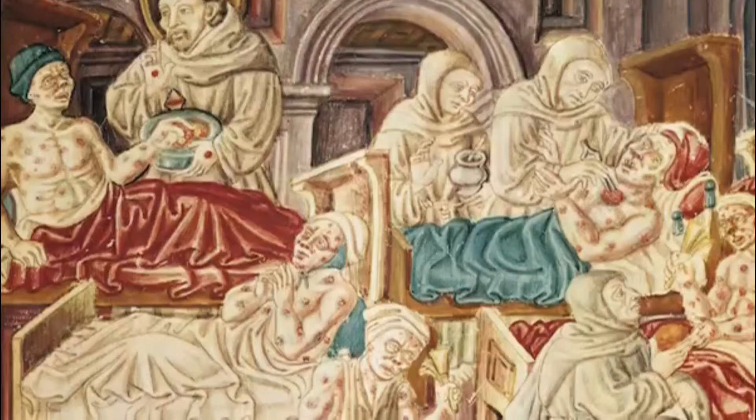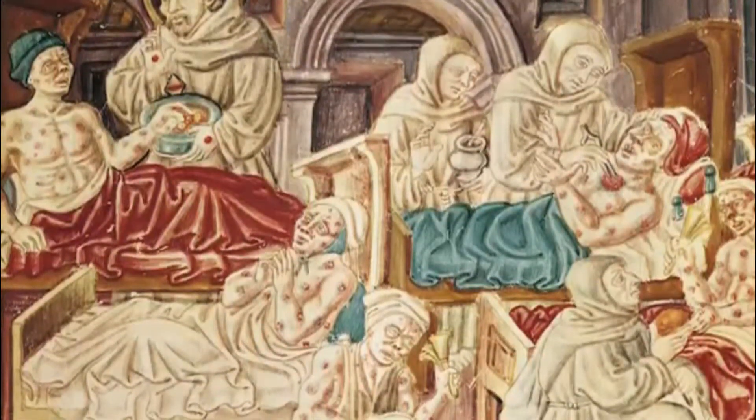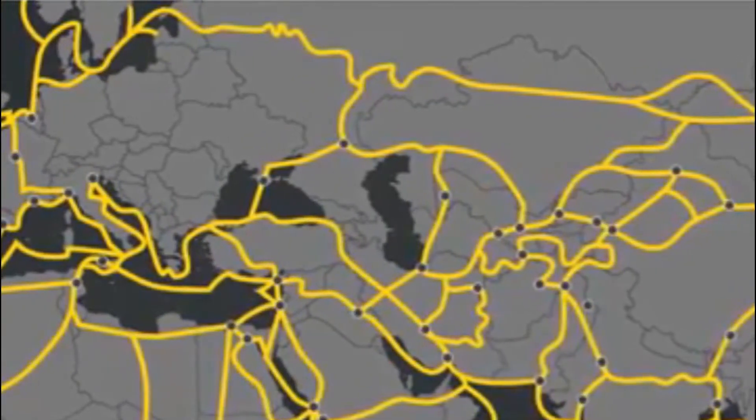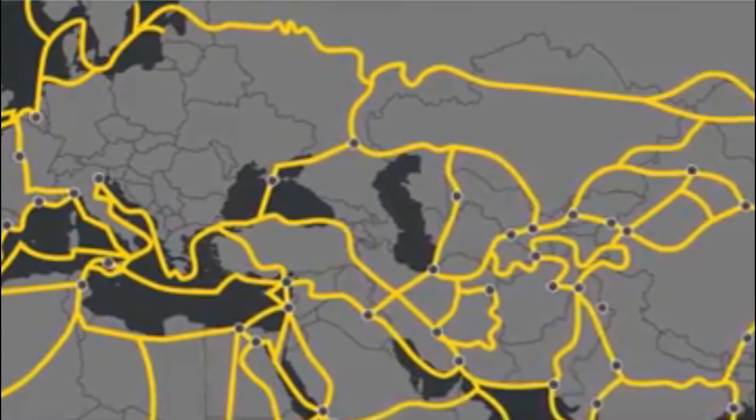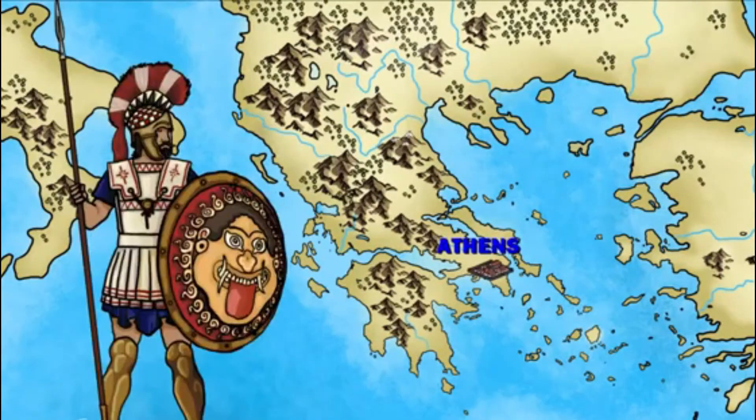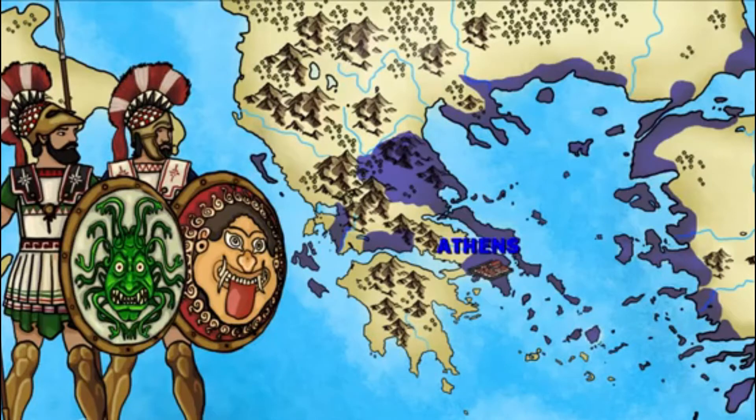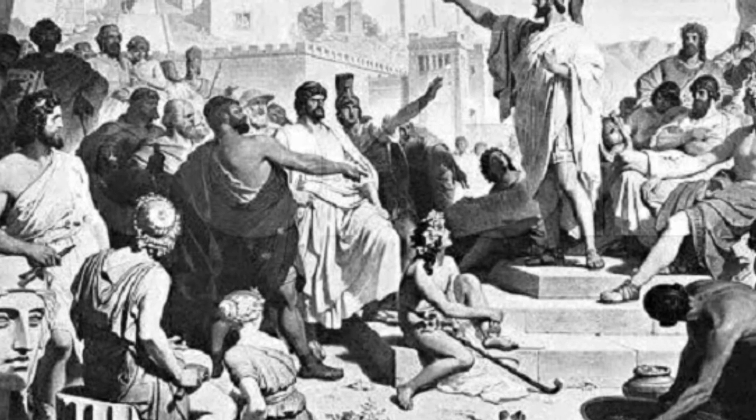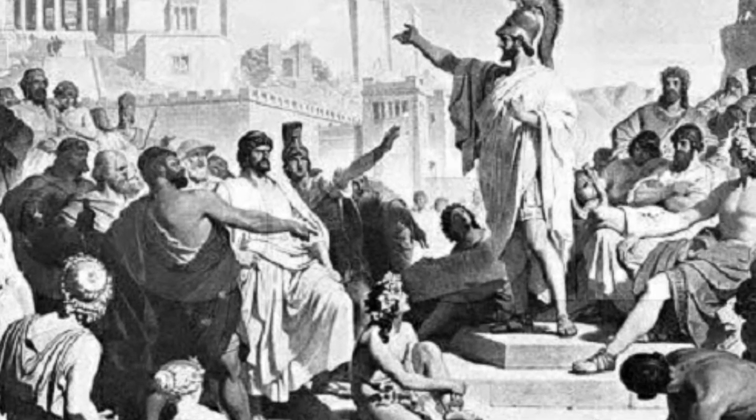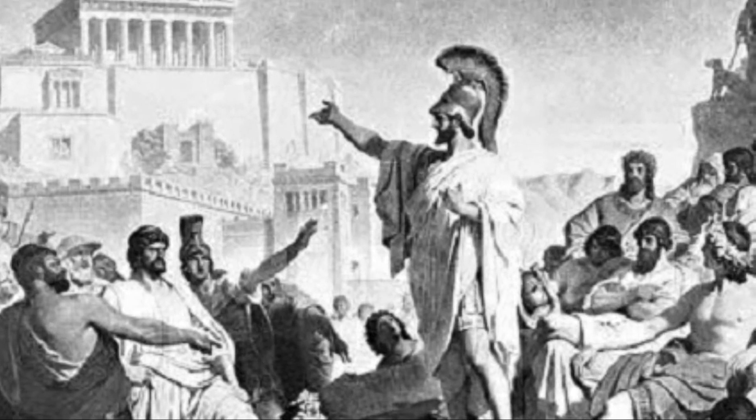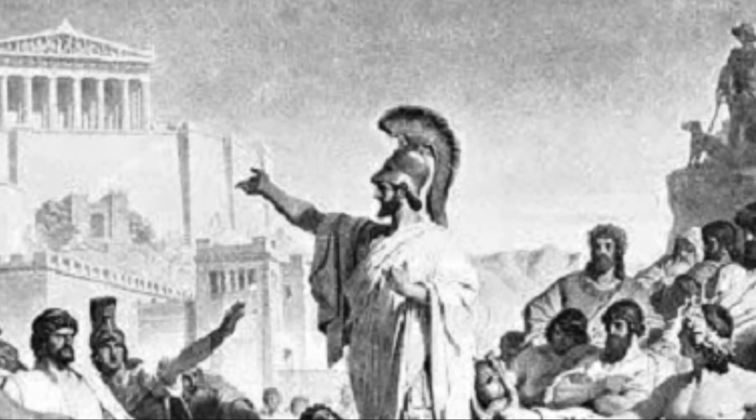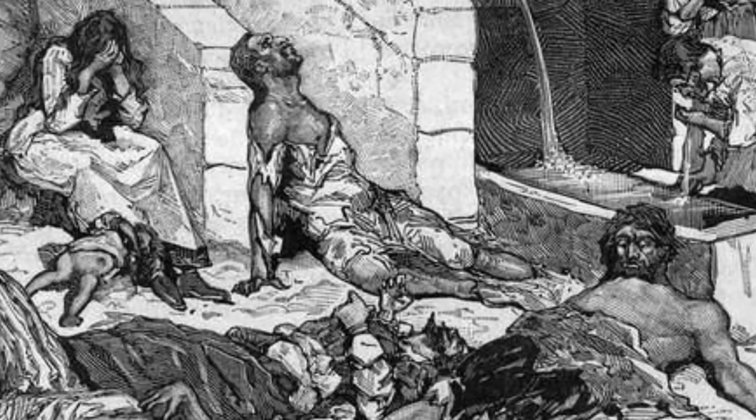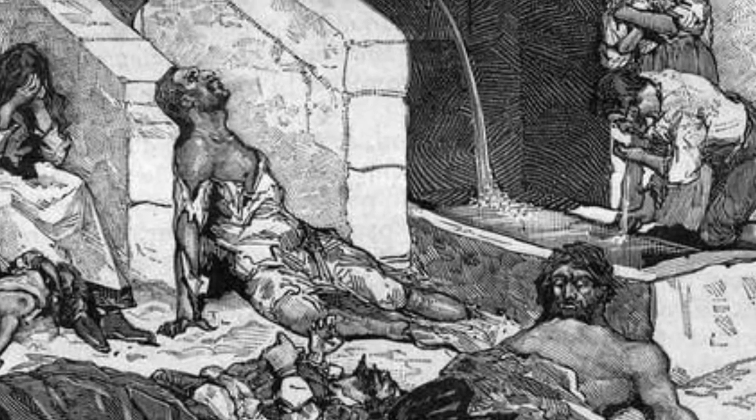When an epidemic spreads beyond a country's borders, that's when the disease officially becomes a pandemic. The more civilized humans became, building cities and forging trade routes to connect to other cities and waging wars with them, the more likely pandemics became. The earliest recorded pandemic happened during the Peloponnesian War between 431 and 404 BC. After the disease spread through Libya, Ethiopia, and Egypt, it crossed the Athenian walls as the Spartans laid siege, and over two-thirds of the population died.